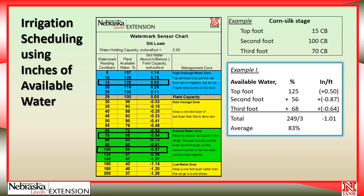What that means is that if we wanted to refill the profile back to field capacity, we would have to put in 1.1 inches. So if we were planning to set the center pivot to put on one inch of water, we'd know it would just fill the profile. If the deficit were only 0.5 and we were putting on an inch, we would know we'd be over-irrigating.